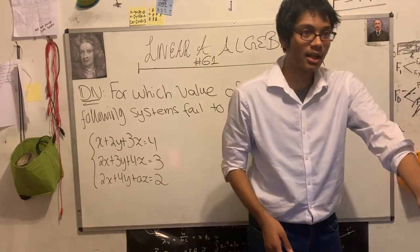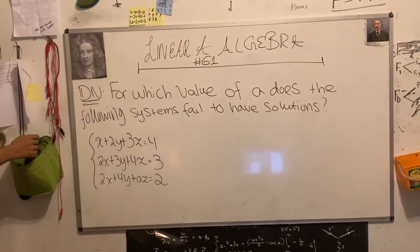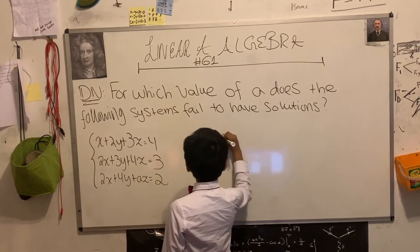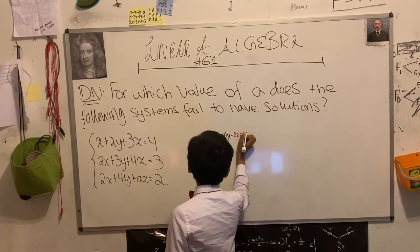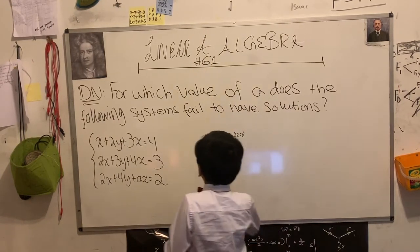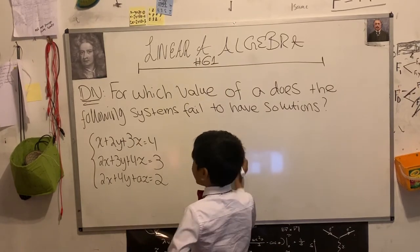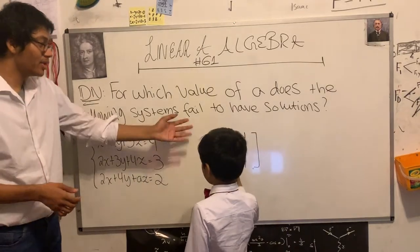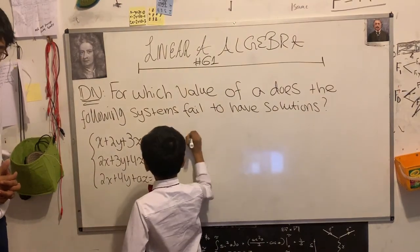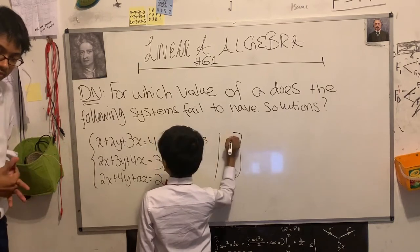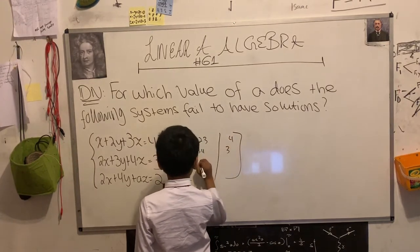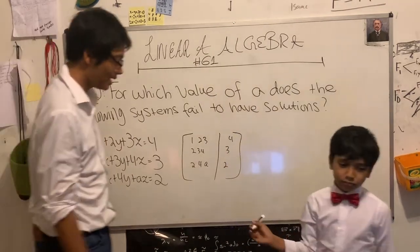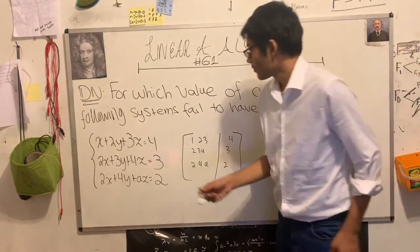Any ideas how we can solve the do now? Would anyone like to try? Please come up to the board. Use a matrix. Write the coefficient matrix. The matrix for the system should be 1, 2, 3; 2, 3, 4; 2, 4, a. So what did we do? Our goal is to find a value of a such that this system has no solutions, right?